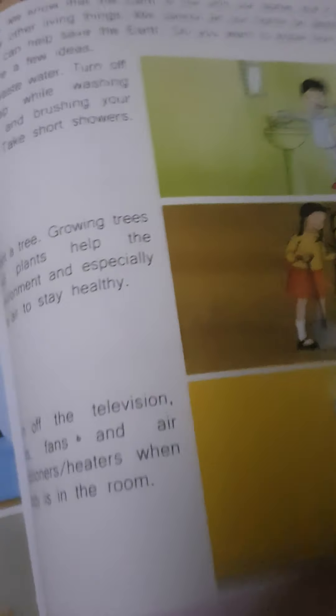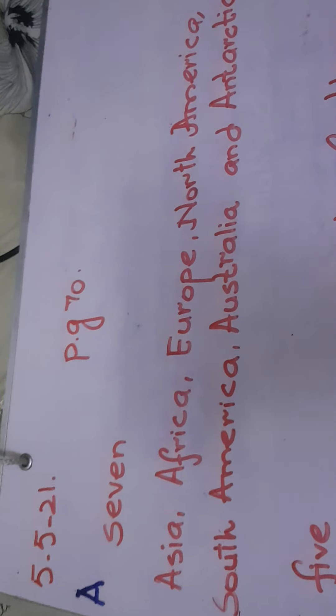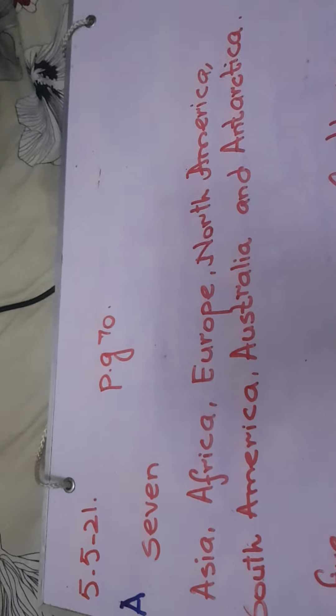Now we are going to do page number 70. Open page number 70. Question one: how many continents are there? There are seven continents — Asia, Africa, Europe, North America, South America, Australia, and Antarctica. This is the answer to question number one.